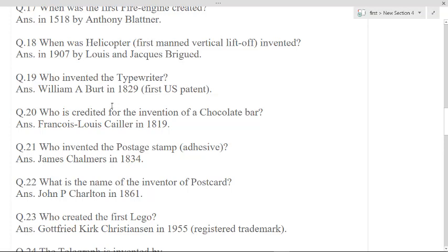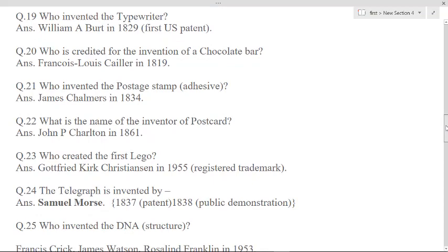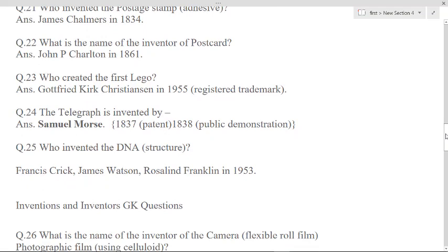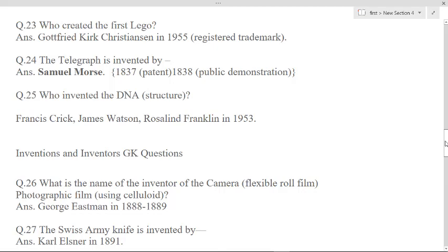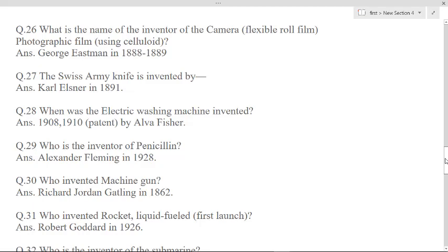Who is credited for the invention of a chocolate bar? Francois-Louis Cailler in 1819. Who invented the postage stamp adhesive? James Chalmers in 1834. What is the name of the inventor of postcard? John P. Charlton in 1861. Who is the name of the inventor of the camera flexible roll film photographic film using celluloid? George Eastman in 1888 to 1889.